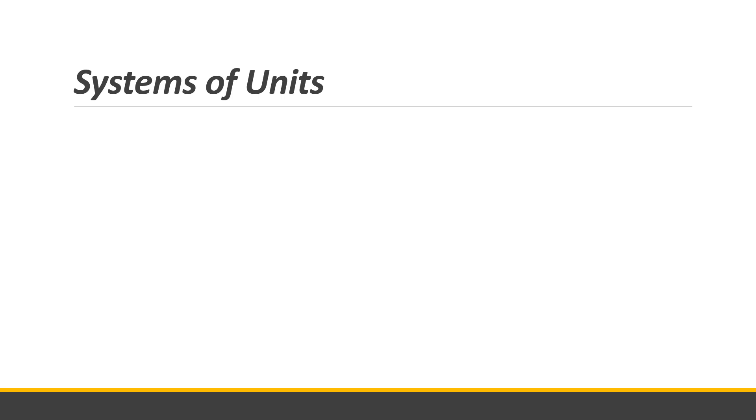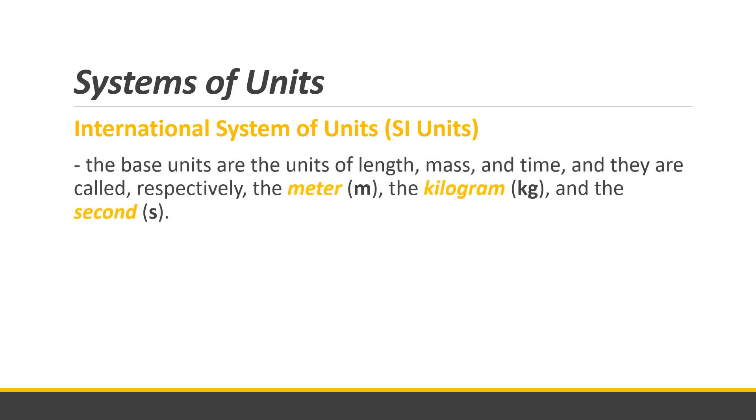Now, moving to the systems of units. There are two systems of units usually. First is the international system of units, or SI units, and the English units. For SI units, the base units are the units of length, mass, and time. They're called, respectively, meter for length, kilogram for mass, and seconds for time. If you have a block with mass of 1 kilogram, moving at an acceleration of 1 meter per second squared, the force applied there is 1 newton. 1 newton is 1 kilogram multiplied by 1 meter per second squared. That is 1 kilogram meter per second squared, which equals 1 newton.